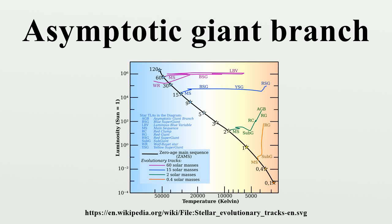The asymptotic giant branch is the region of the Hertzsprung-Russell diagram populated by evolving low-to-medium-mass stars. This is a period of stellar evolution undertaken by all low-to-intermediate-mass stars late in their lives.